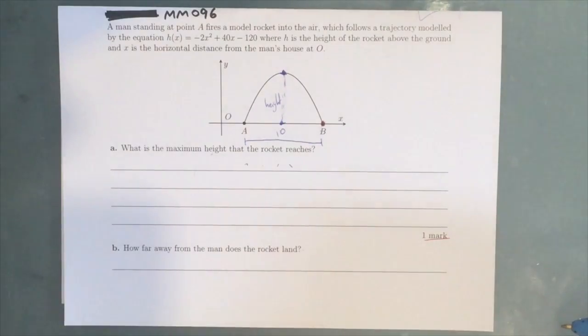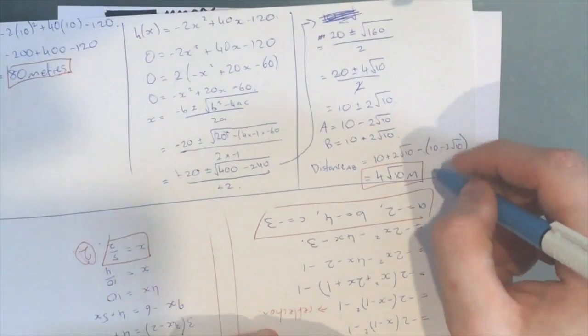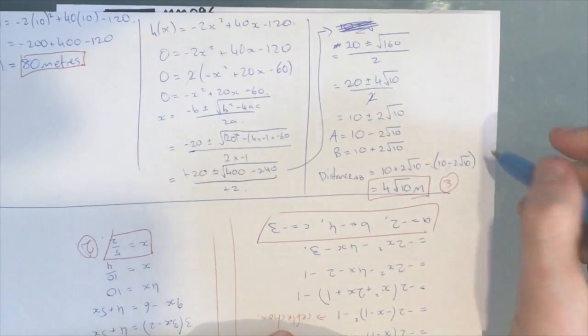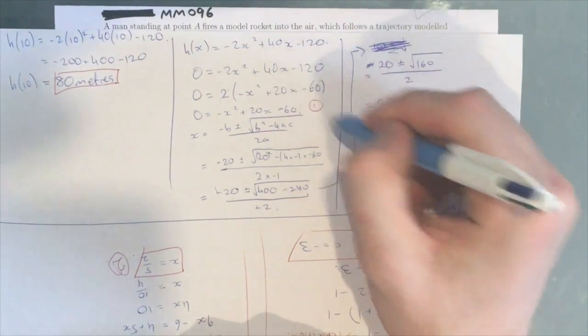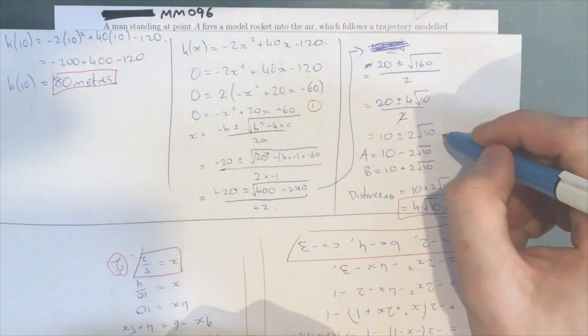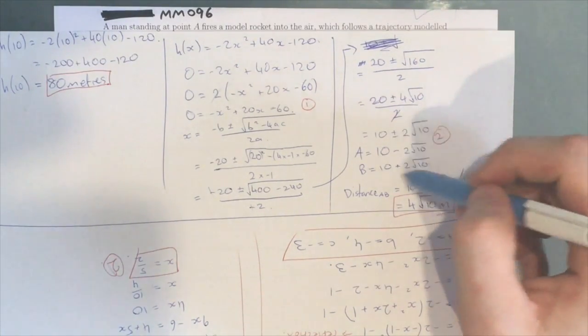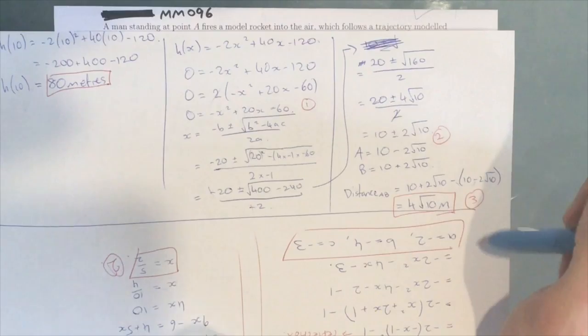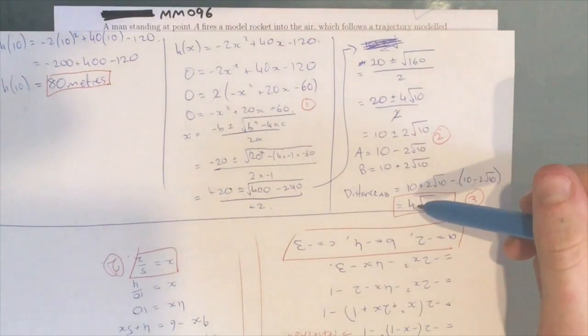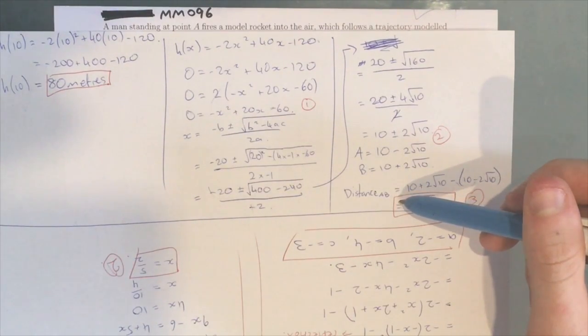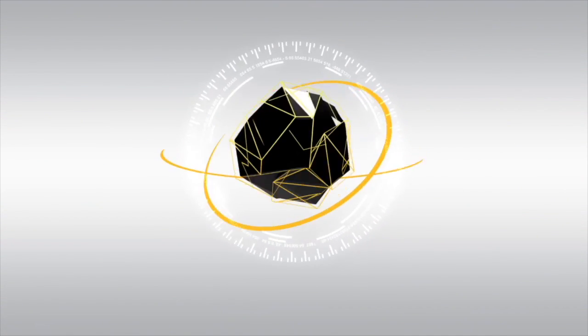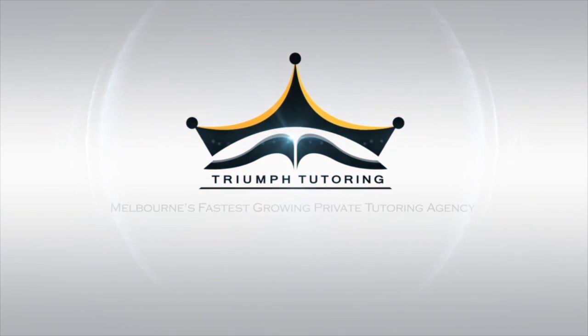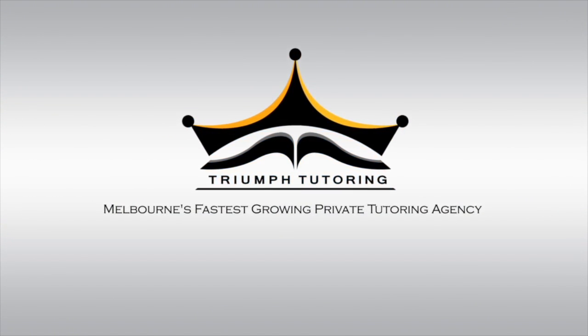That is a question worth three marks. The third mark obviously being here, your first mark being here simplifying that, and then the second mark being here. So working that out there and then working out the distance is the third mark. So your final answer is distance from A to B, or from the man to where the rocket lands, is 4√10 meters.